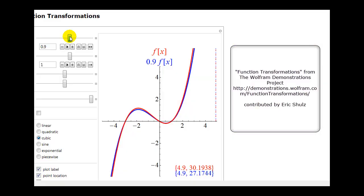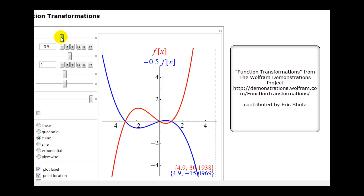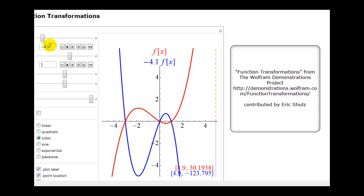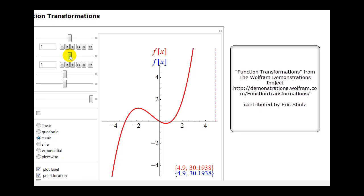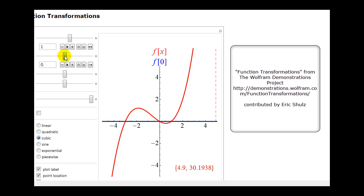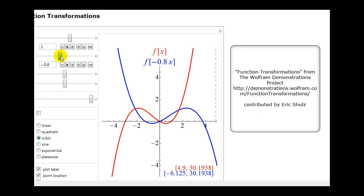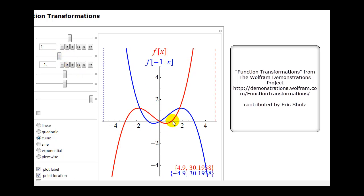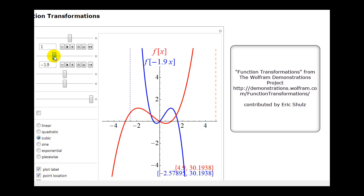Let's take a look at this as well. We'll decrease a, and as soon as a is negative it will be reflected across the x-axis. When a is equal to negative 1, the blue function is a perfect reflection of the red function across the x-axis. We will also have vertical stretches and compressions when a is negative. Now when b is equal to negative 1, as soon as b is negative it will be reflected across the y-axis, and then it's a perfect reflection across the y-axis. We can also have horizontal stretches and compressions when b is negative.